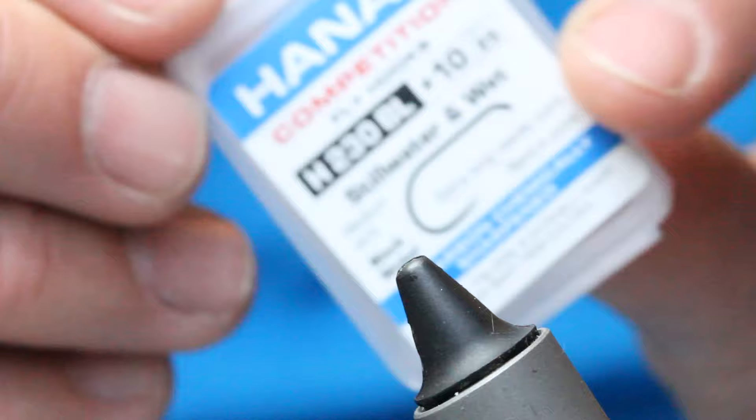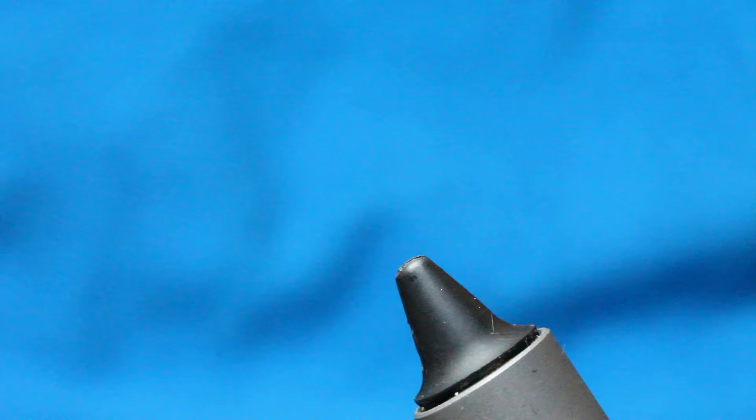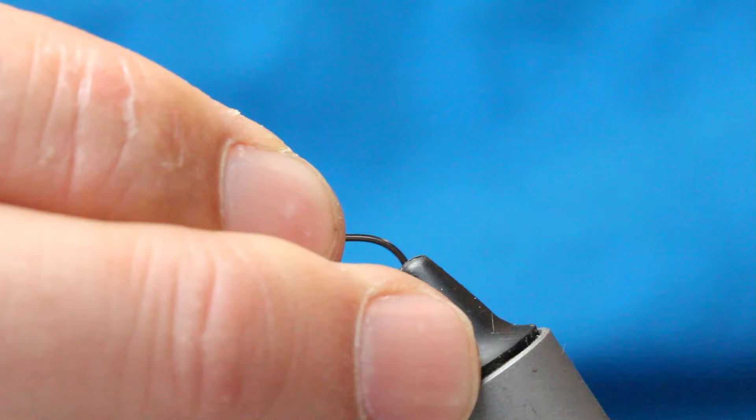I'll start off with a barbless hook device. This is a 230mm size 10. You can use a size 8, but you'll need more CDC fibers. Stick it in the vise, make sure you're nice and happy, like so.